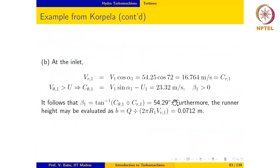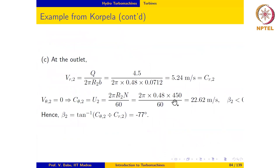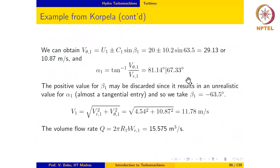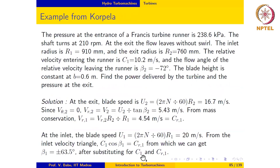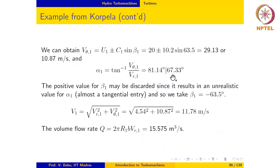So we will discard this choice for α and we will use the negative value for β. This is obtained from the positive value for β. So we will use the negative value for β, which is minus 63.5.